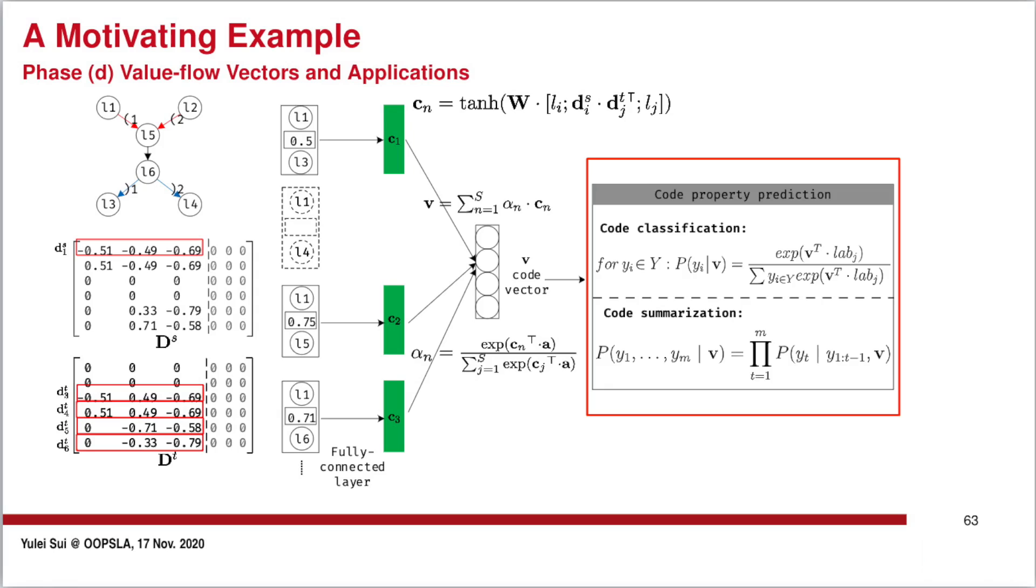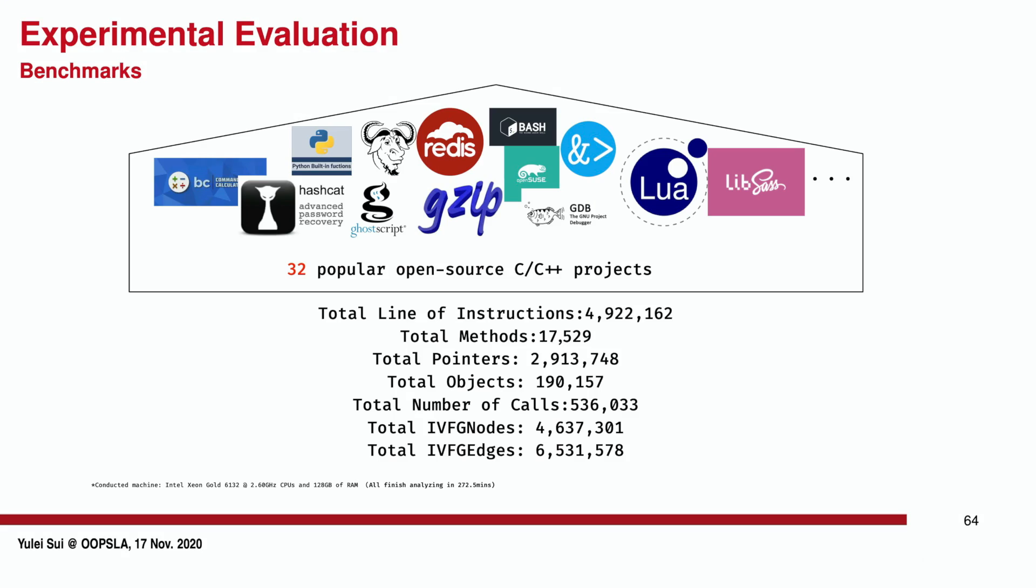We evaluate flow-to-vec using 32 popular open-source projects across a range of domains, including database, emulator, message passing tool, and so on. In these projects, we used over 17,000 well-commented methods for our experiments.